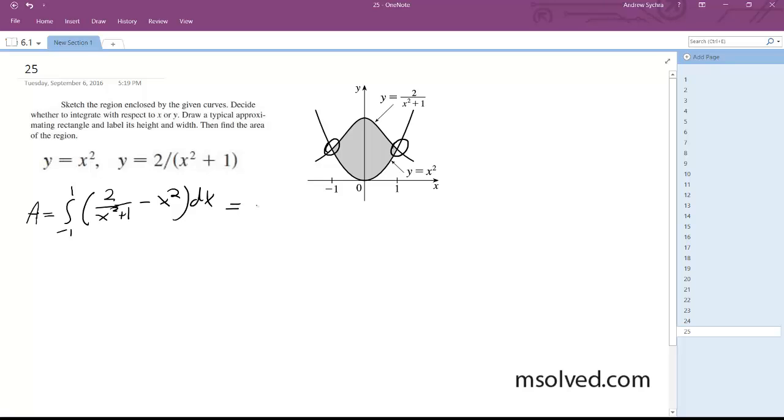which is going to be equal to 2 quantity 0 to 1. We're just going to take half of this because if you add them both up, you'll get the equivalent negative on the left side as you do for the right and it just cancels out. So 0 to 1, again it's the same thing: 2 over x squared plus 1 minus x squared dx.